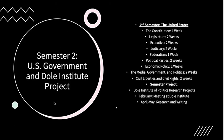Semester two: we'll switch over to United States government and also do a project at the Dole Institute. Second semester covers the Constitution for a week, then the legislature, the executive, and the judiciary. We'll spend a week on federalism, cover political parties and their history and how they interact today, look at economic policy, media and politics, and civil liberties and civil rights. There's also a semester project at the Dole Institute of Politics — we'll go there in February to learn how to use the archives, then do the project April through May.